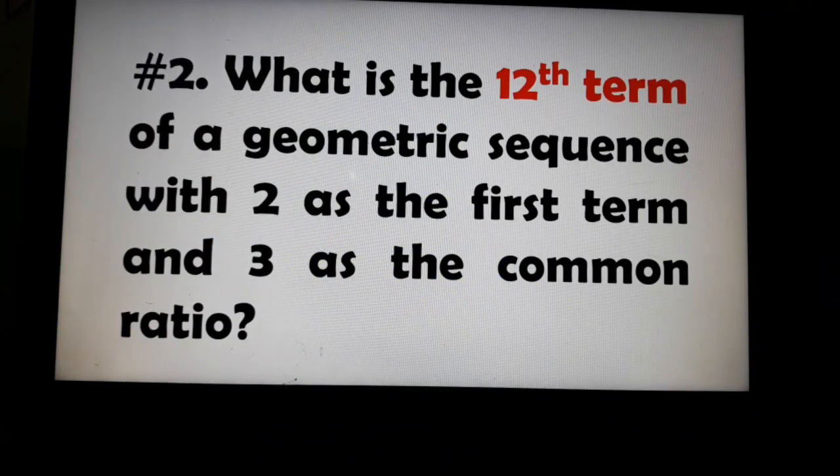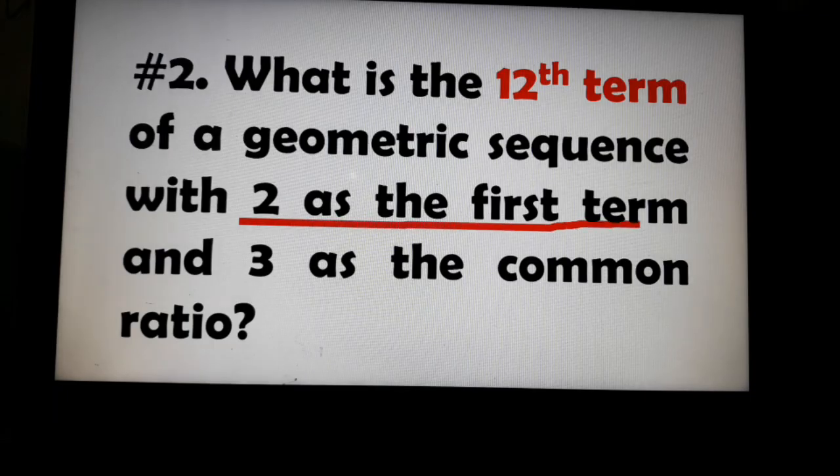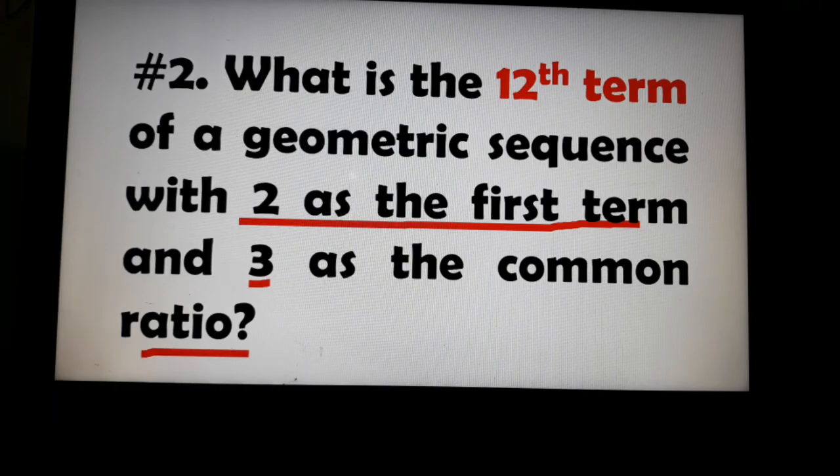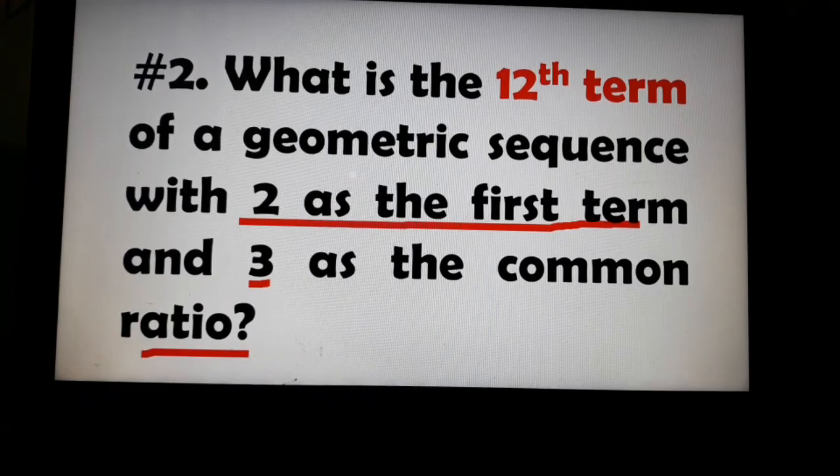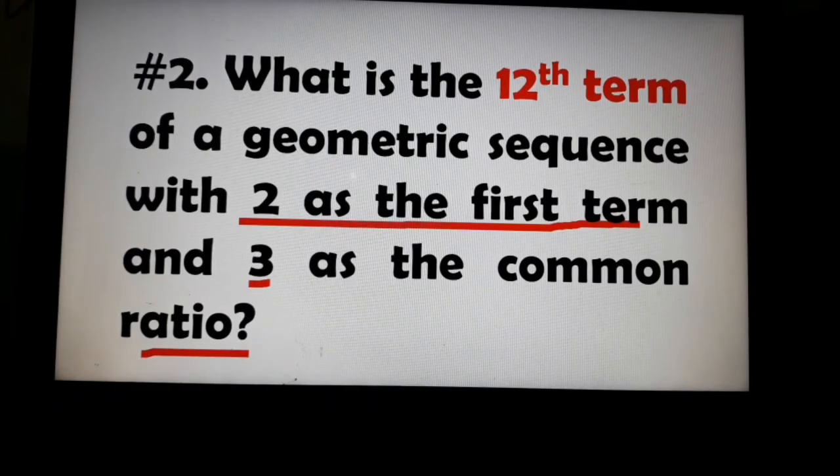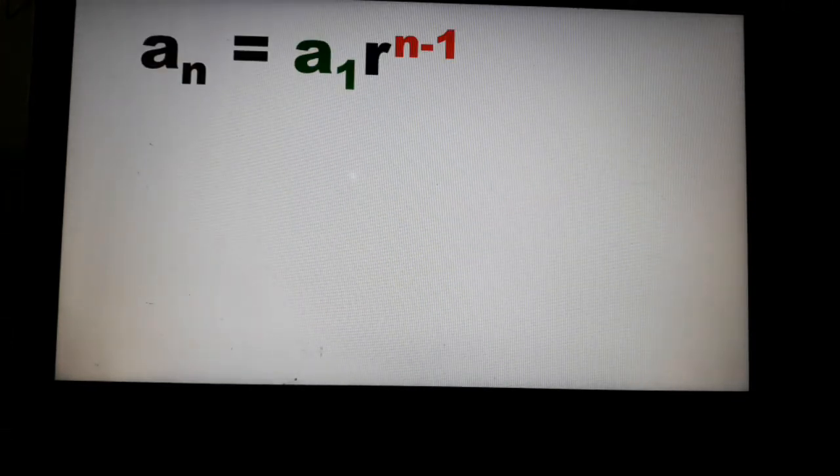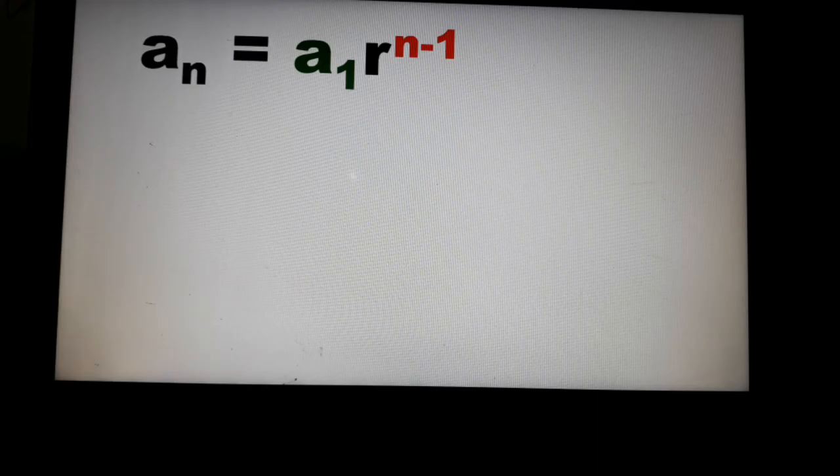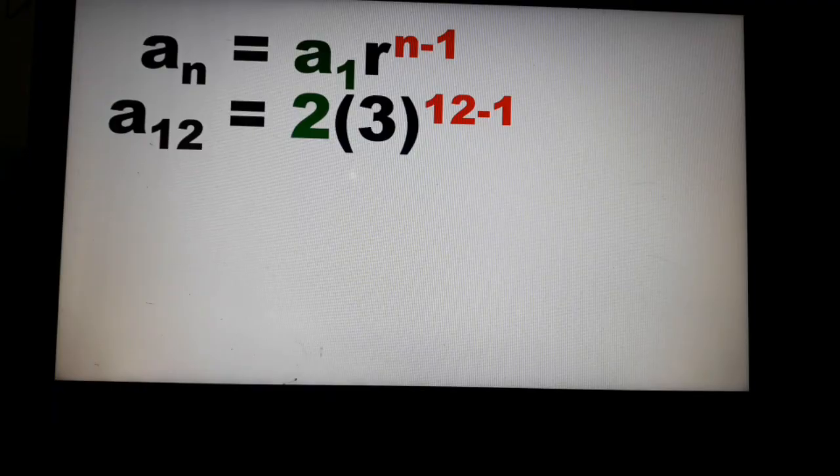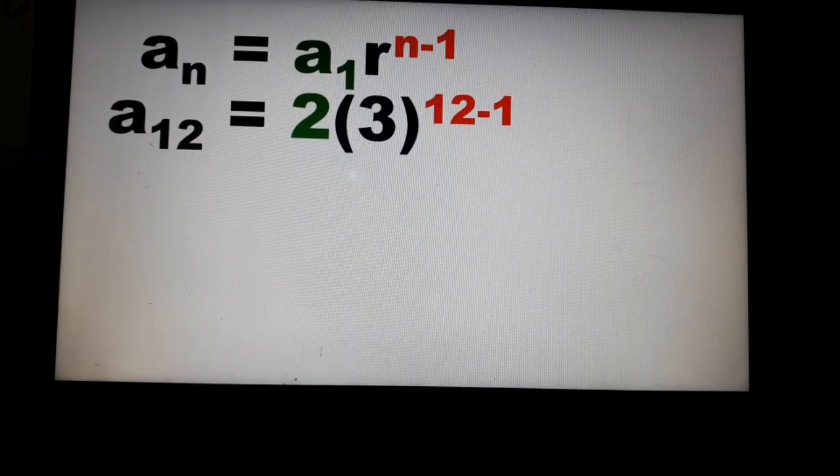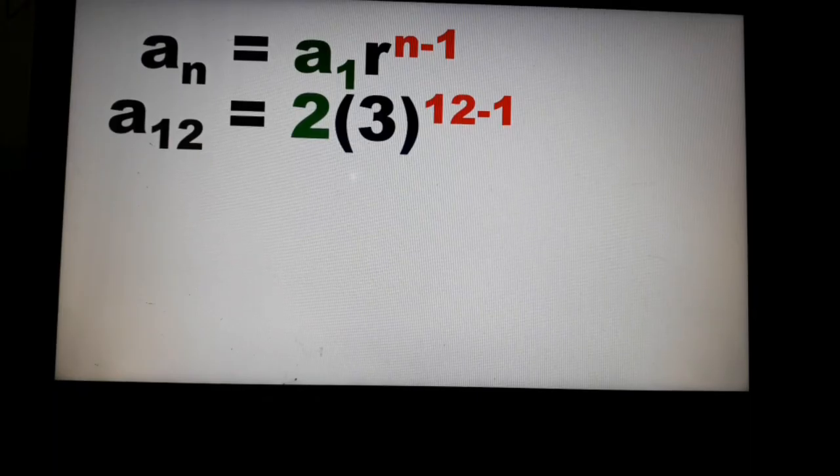Example number 2. What is the 12th term of a geometric sequence with 2 as the first term and 3 as the common ratio? So we'll use our formula. First term, 2, common ratio or r is 3. So this is the formula. a_12 is equal to 2 times 3 raised to 12 minus 1. So where did our 12 come from? It came from the subscript of a.